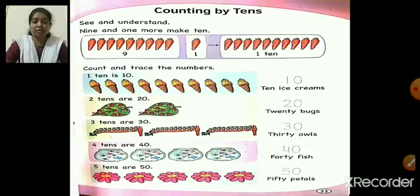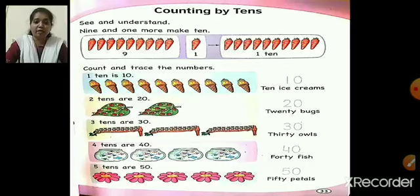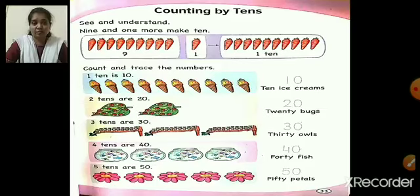Three 10s are 30. We can see three groups of owls, and in each group we have 10 owls. So 10 plus 10 plus 10 — how much? 30. If you add 10 three times you get 30. That's why three 10s: 10 in each group which makes 30. So three 10s are 30.